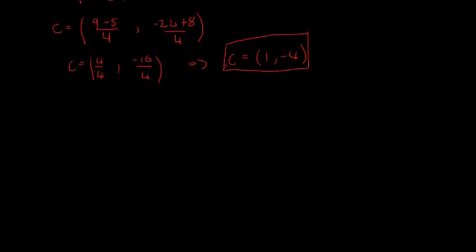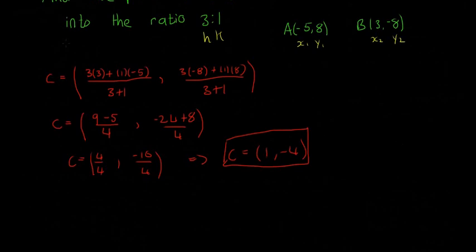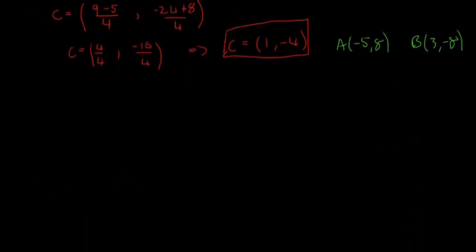So I will go down here, and we're going to have C is equal to 1 minus 4, and I'll just write these two green ones as well. A is minus 5 and 8, and B is 3 and minus 8. So give me one second, and I'll draw this all out in a graph, and you can see what exactly we just did.